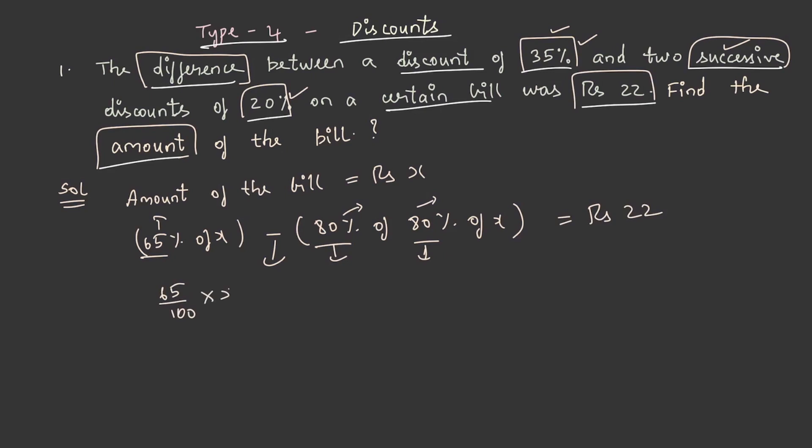And this becomes 65 by 100 into X minus 64 by 100 into X is equal to 22. Then X by 100 is equal to 22. From this, X is equal to 2200. So the amount of the bill is equal to rupees 2200.